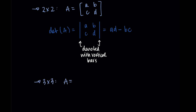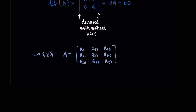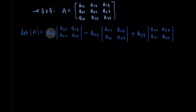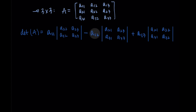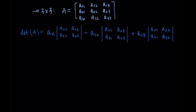In the three by three matrix case, say we have matrix A with elements A-sub-ij. For the determinant of A, we start with A11 and take the determinant of the bottom portion of the matrix — crossing out the row and column that A11 is in, then taking the determinant of the remaining parts. Then we subtract A12, crossing out its row and column and taking the determinant of the values left over: A21, A31, A23, A33. Then we add A13, the third position in the first row, crossing out its row and column and taking the determinant of A21, A31, A22, A32.